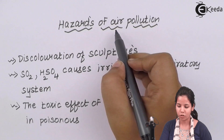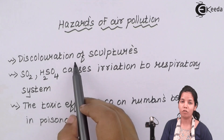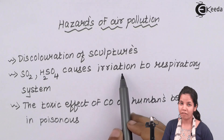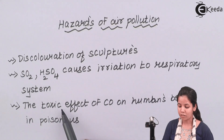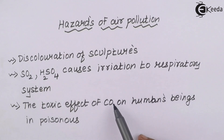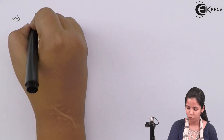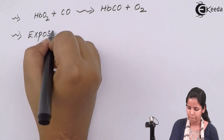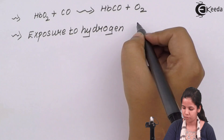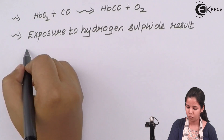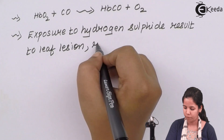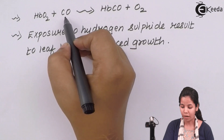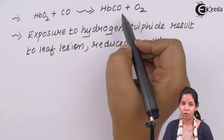To summarize the harmful effects of air pollution: discoloration of sculptures like the Taj Mahal, Pyramids of Giza, or Statue of Liberty; SO2 and H2SO4 causing irritation of the eyes and respiratory system, making you unable to breathe; and the toxic effects of carbon monoxide, which combines with hemoglobin and oxygen to form carboxyhemoglobin — very lethal and poisonous.